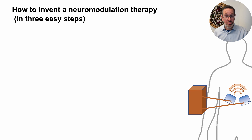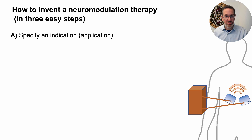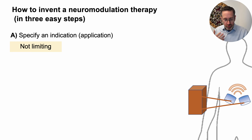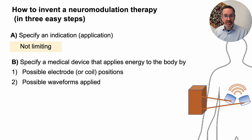Now we can get to the main point: how to invent neuromodulation therapy in three steps. The first step is to specify what you want to use it for — an indication. I want to treat pain, I want to treat depression, and so on. However, the indication is often not limiting — you could invent something for depression, but that same dose may translate into other indications as well.